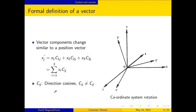The components of the vector transform in a manner similar to a position vector. The transformation we are considering is a coordinate system rotation. The newly rotated coordinate axes are represented by 1 prime, 2 prime, and 3 prime. The component in the newly transformed coordinate system in the j-th direction is the summation of the product of the component in the old coordinate system with the cosine of the angle between the old axis i and the new axis j. It is to be noted that the direction cosine C_ij is not equal to C_ji.